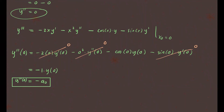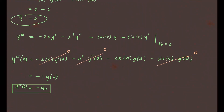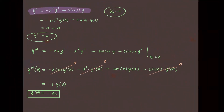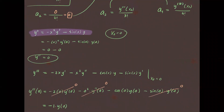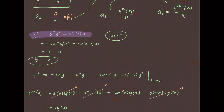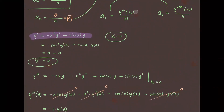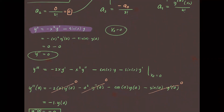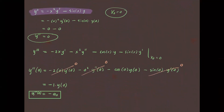This means our coefficient a₃ equals the third derivative divided by 3 factorial, which gives us negative a₀ over 3 factorial. That's our a₃. Now let's compute one more — a₄ — and then we'll plug in all the coefficients.